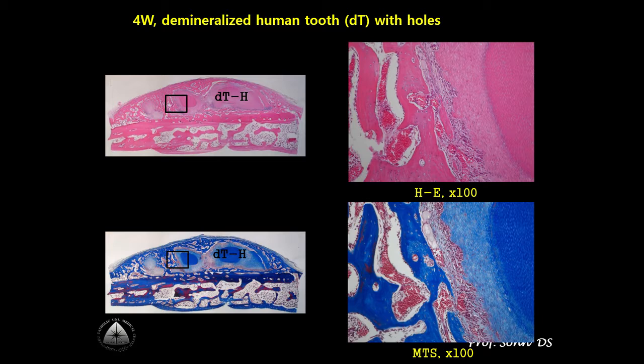This is the histologic result of Group 1 — demineralized dentin block with micro holes. Most of the dentin block bottom and micro holes show newly formed bone. New bone formation was also occurring on the upper surface of dentin block under the periosteum. This is an amazing result from demineralized microperforated dentin blocks.